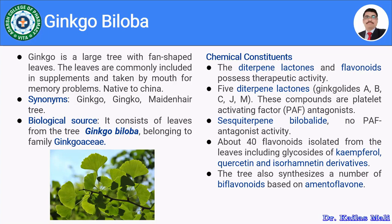Ginkgolides A, B, C, J, and M are platelet activating factor (PAF) antagonists — all these diterpene lactones act as antagonists of the platelet activating factor. It also comprises sesquiterpene bilobalide, which does not have PAF antagonistic activity. Apart from these, it comprises 40 flavonoids, including glycosides of kaempferol, quercetin, and isorhamnetin derivatives. The tree also synthesizes a number of biflavonoids based on amentoflavone.